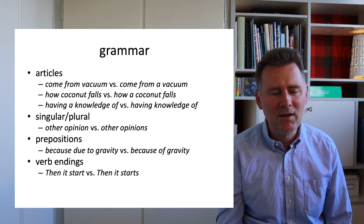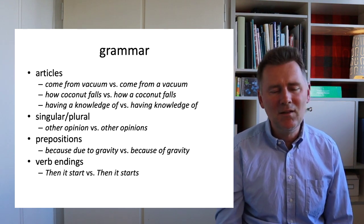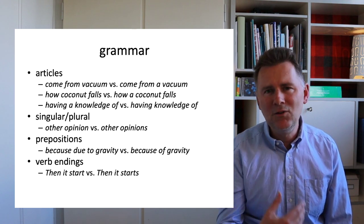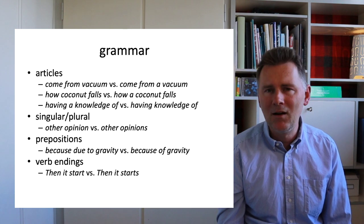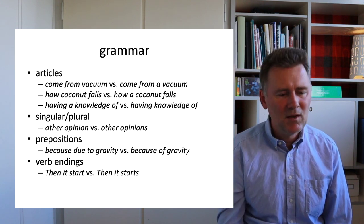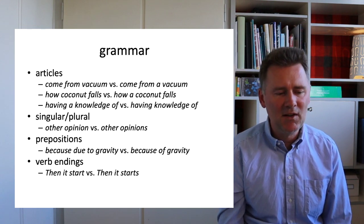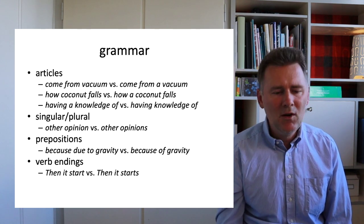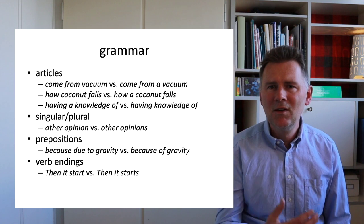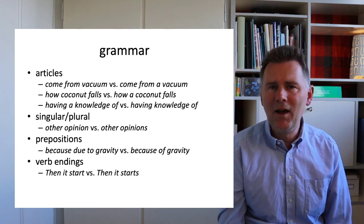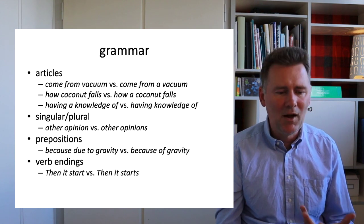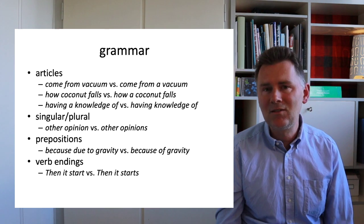The presence or absence of determiners is a big variable that distinguishes different varieties of English. Another distinction is between singular and plural: our speaker said 'other opinion' where you might expect 'other opinions' with a plural -s. The absence of inflections is another typical characteristic of many non-native varieties. There are also differences with prepositions — the speaker says 'because due to gravity' where I would say 'because of gravity.' Verb endings are another variable: our speaker says 'then it start' without the third person singular -s.